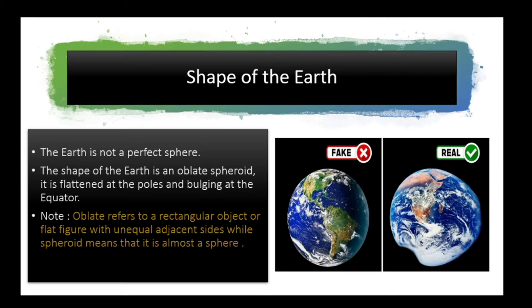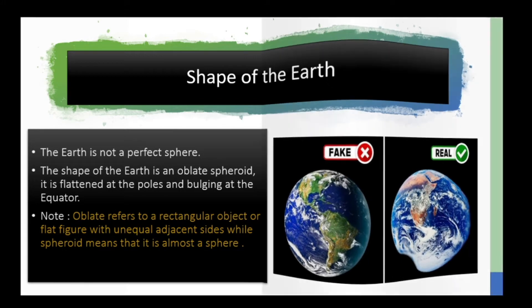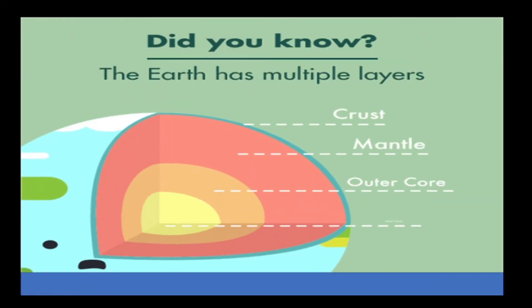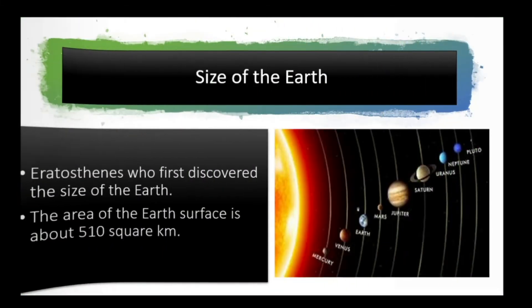Oblate refers to a rectangular object or a flat figure with unequal adjacent sides, while sphere means that it is almost a sphere. So did you know that Earth has multiple layers: crust, mantle, outer core, and inner core?